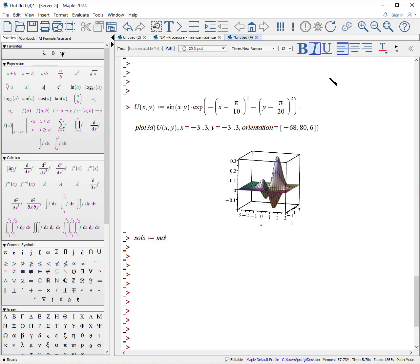And again, we'll say solutions colon equals, we'll get the, calculate the maximum. Maximize of the u(x, y), and we're going to give it a little help. It's going to say x is going to be in the region from minus 3 dot dot 3, and y is going to be in the region from minus 3 dot dot 3, and we'll look for the location.